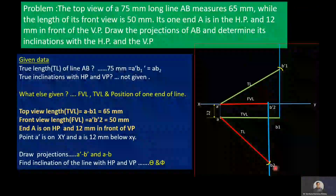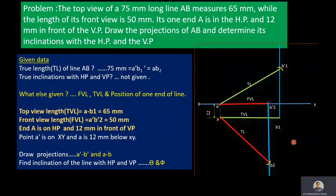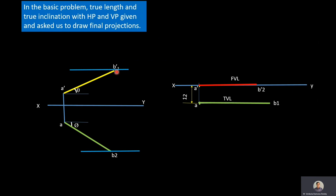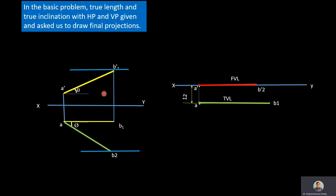We will now recollect the procedural methodology for the basic problem under the line inclined to both planes concept. In the basic problem, the true length and true inclinations with HP and VP are given, and we are asked to draw the final projections. Here A'B1' is the true length in the front view, theta is the true inclination with HP, AB2 is the true length in the top view, and phi is the true inclination with VP. From the true length A'B1', we draw the apparent length in the top view, and from the true length AB2, we draw the apparent length in the front view.